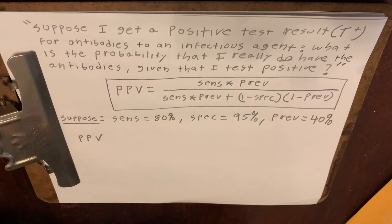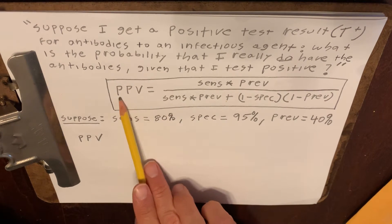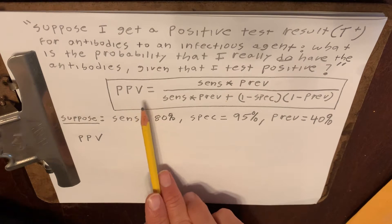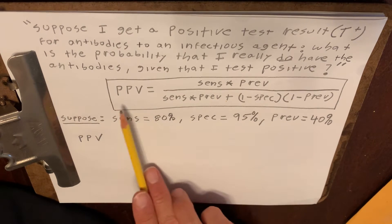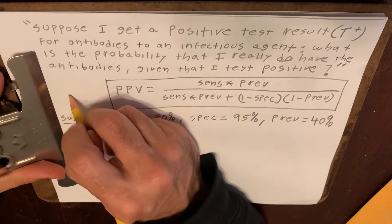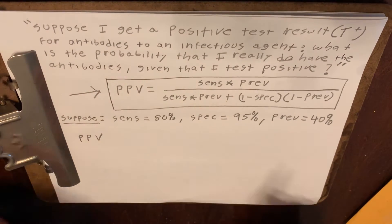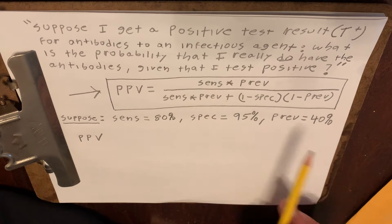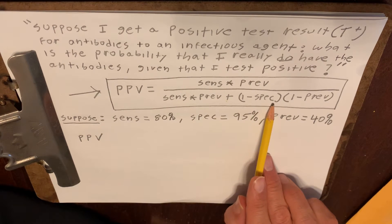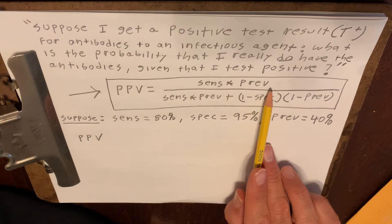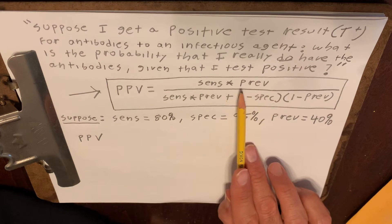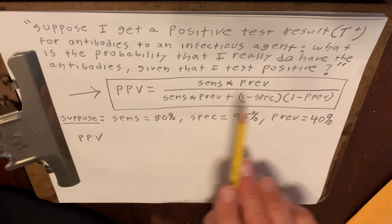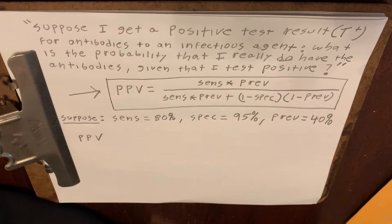Before watching this video, it would be helpful if you watched my video on positive predictive value, because in that video I derive this formula, which I am going to use today. This formula relies on the sensitivity of the test, the specificity of the test, and the prevalence of the infection in the population or subgroup from which the patient who got the positive test result belongs.